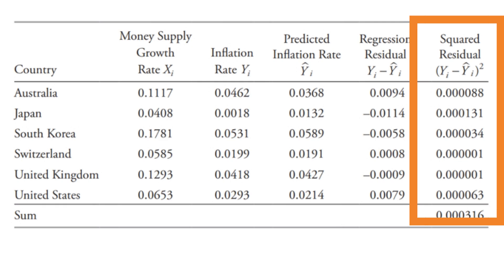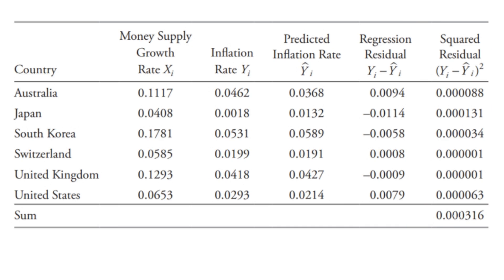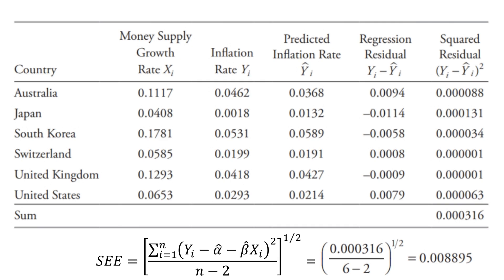The last column contains the squared regression residuals. The sum of the squared residuals is 0.000316. Dividing that number by n minus 2, or 4, and taking the square root of the result gives us the standard error of estimate, which is equal to 0.89%.